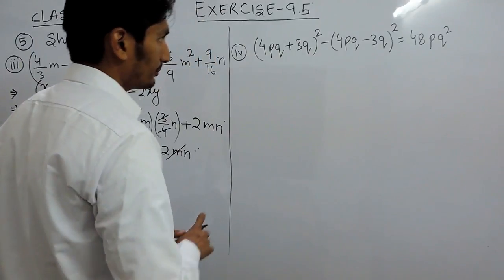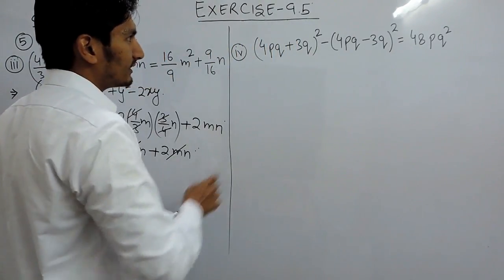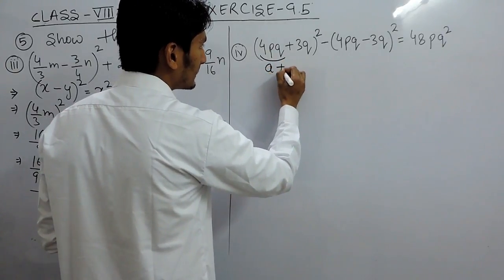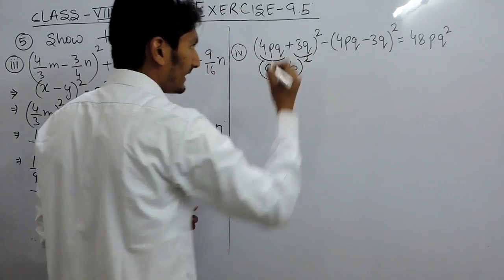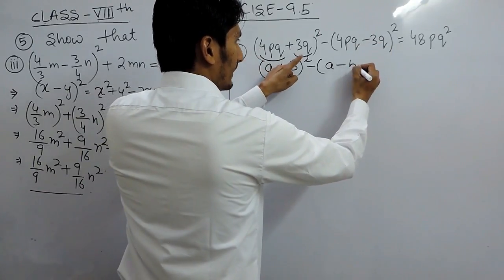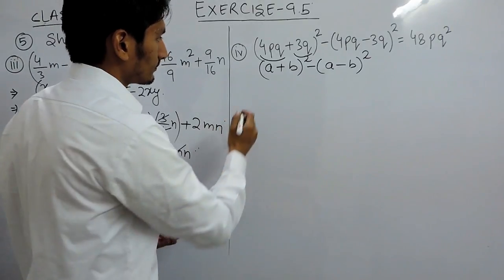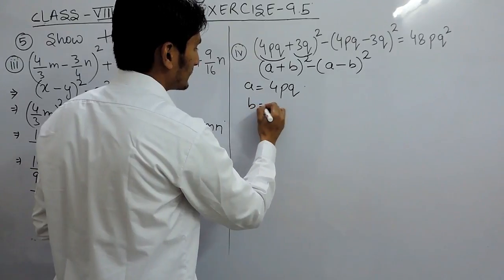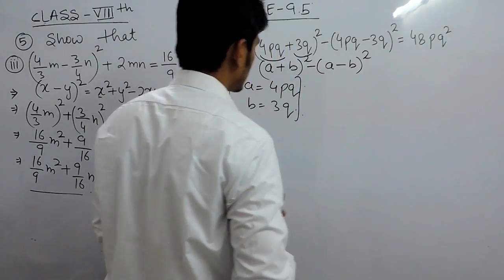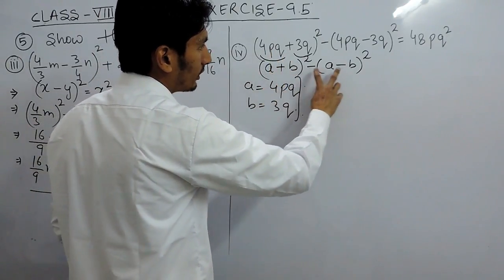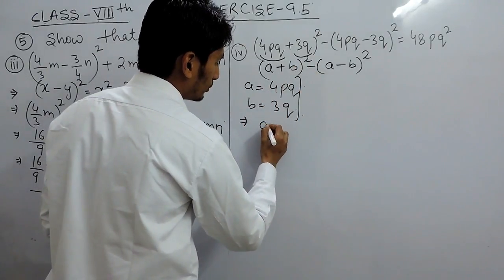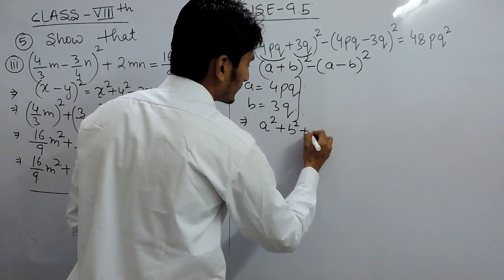Similarly, here also we have to prove that the left hand side is equal to the right hand side. Because the values are too big, I can consider this complete value as a and this as b. This is a plus b whole square minus — this is our a and this is our b. I have considered a as 4pq and b as 3q. Now I am solving the left hand side. a plus b whole square is basically equal to a square plus b square plus 2ab.